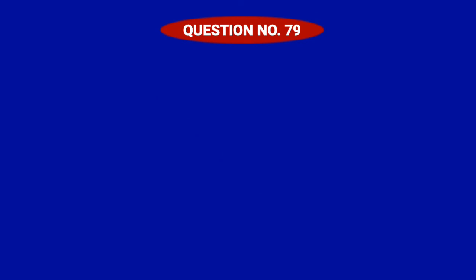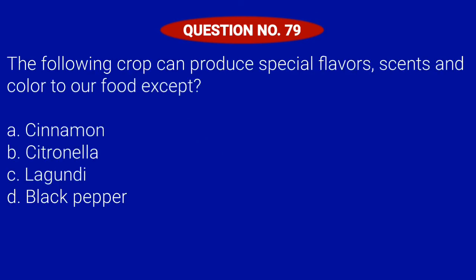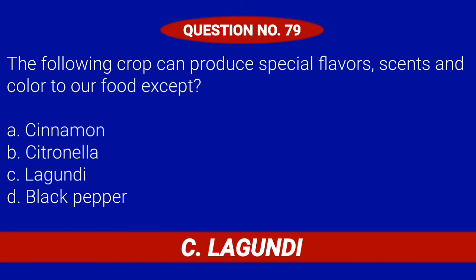Question number 79. The following crops can produce special flavors, scents and color to our food, except. Letter A: Cinnamon. Letter B: Citronella. Letter C: Lugundi. Or Letter D: Black pepper. Correct answer is Letter C: Lugundi.